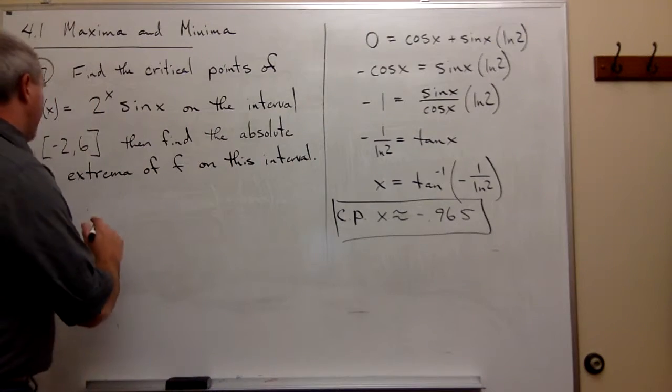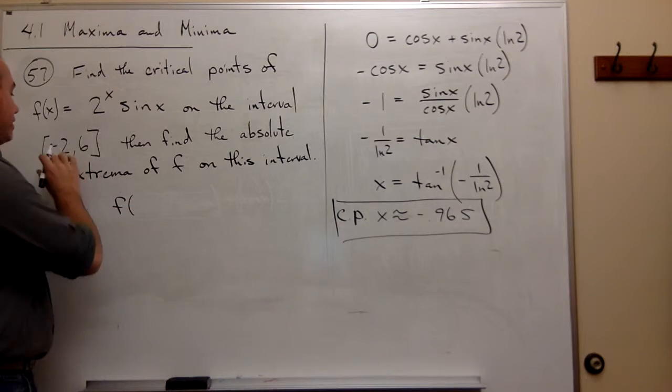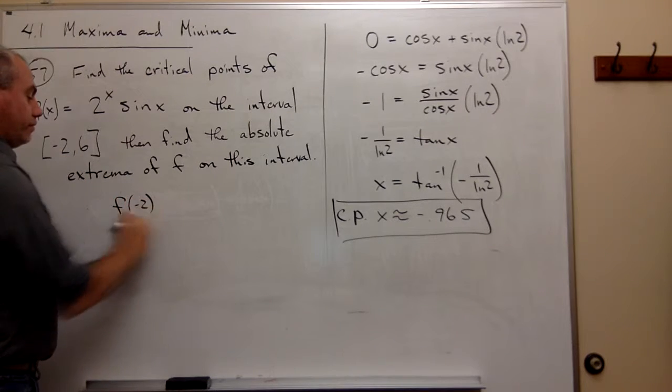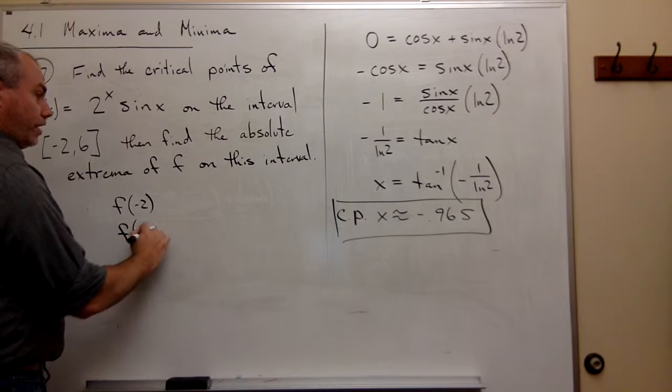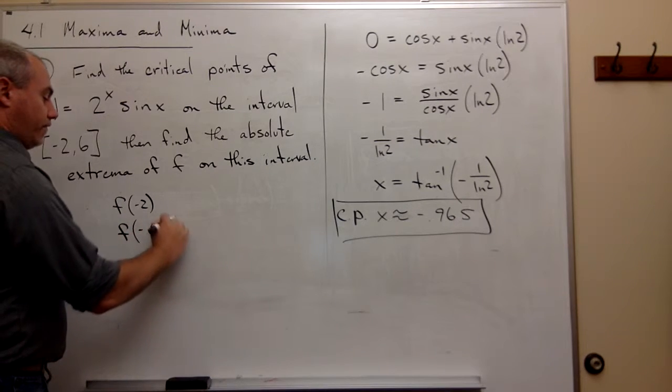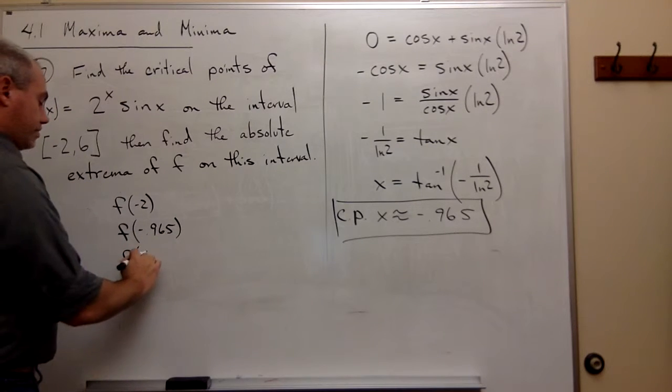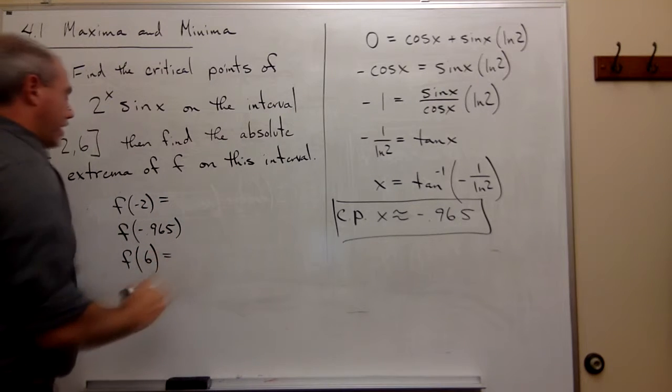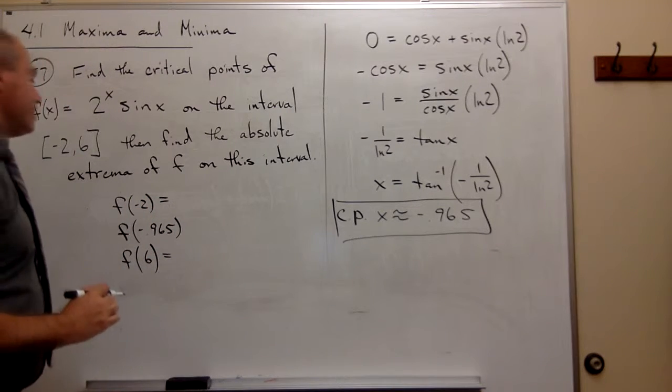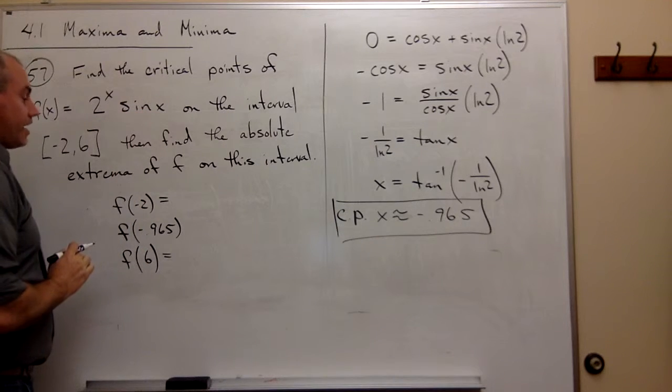And I have three things I want to put into the function. The first one is an endpoint, negative 2. The second is my critical point, which is negative 0.965. And the third is 6. Two of these I can maybe deal with. Actually, all of them are sort of hard because of that sign.